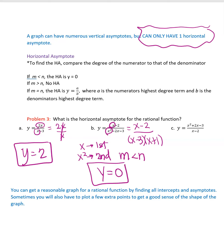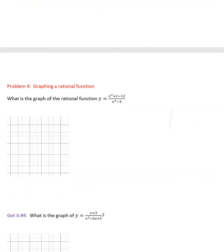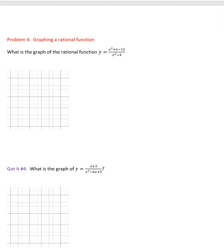For the third example, factoring gives (x − 3)(x + 1) on top and x on the bottom. The numerator is degree 2 (x²) and the denominator is degree 1 (x). Since the numerator is bigger than the denominator, there are no horizontal asymptotes. You can get a reasonable graph by finding all intercepts and asymptotes, and sometimes you'll need to plot extra points. Tomorrow we'll work on the actual graphing.